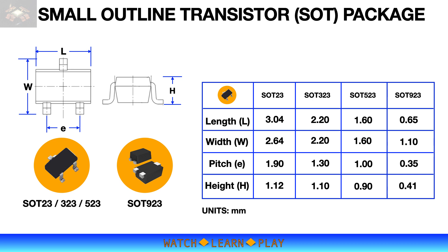Small outline transistor, or SOT packages, are made for transistors. SOT23 is the most popular surface mount package for low-power applications. With its small footprint and height of just over a millimeter, it is used widely in portable and mobile electronic devices. But with electronic devices getting smaller and smaller and board space at a premium, SOT323, SOT523, and SOT923 packages do the job for these space-limited applications.